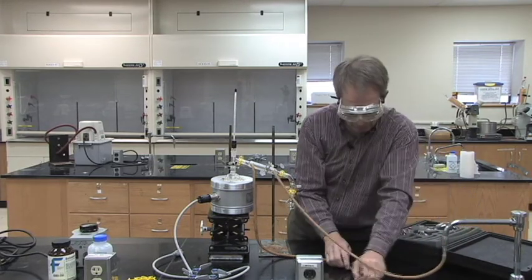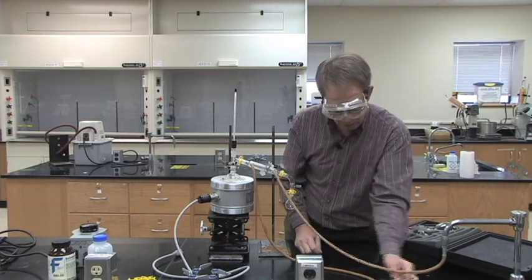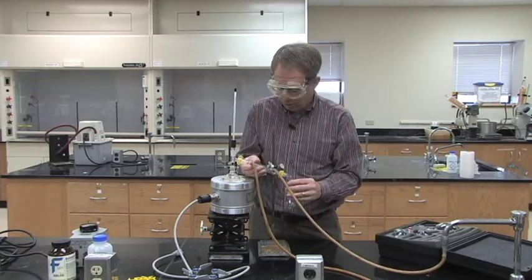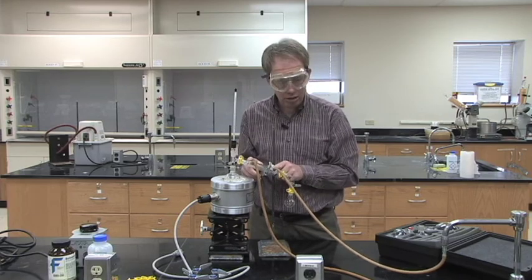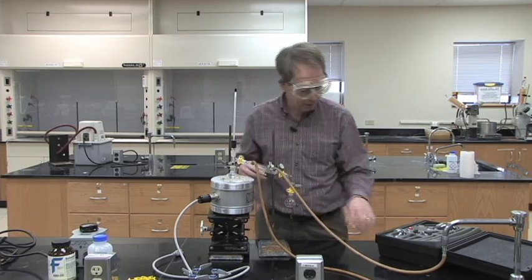And then the upper end of the condenser will go into the drain of the sink. That way as you're going along, you will fill the condenser with water and then the water will run out to the drain.